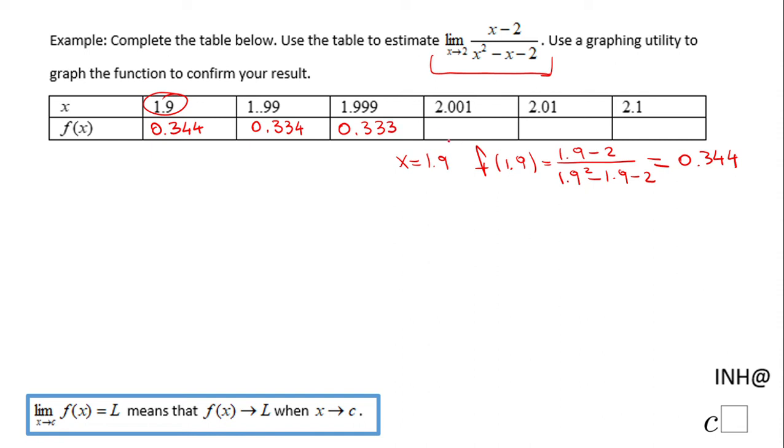Similarly you're gonna do for the values at the right of 2, like 2.001 you're gonna get 0.333, 2.01 you're gonna get 0.334, and finally at 2.1 we end up with 0.344. So now looking at this table and knowing that 2 is here, right?